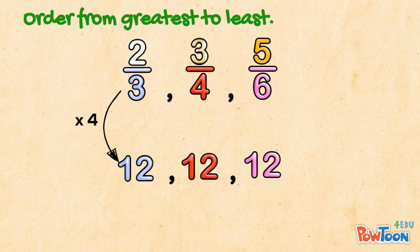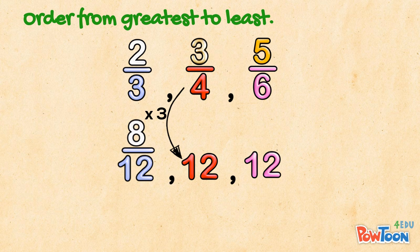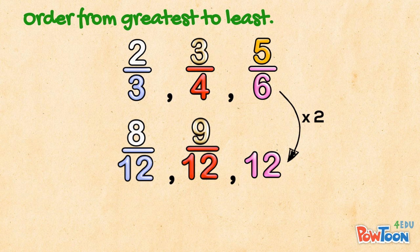3 times 4 is 12. So for the numerator, 2 times 4 is 8. 4 times 3 is 12. So 3 times 3 is 9. And 6 times 2 is 12. So 5 times 2 is 10.